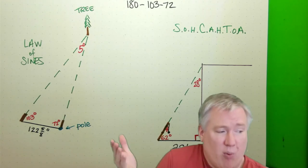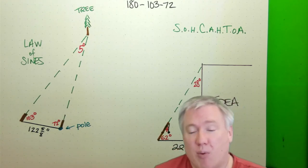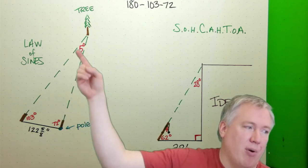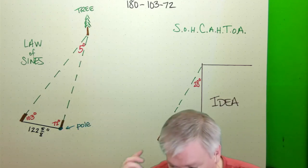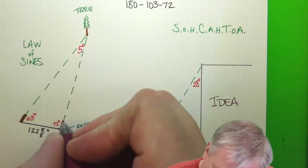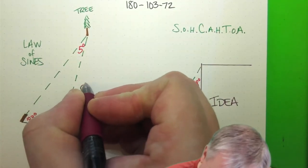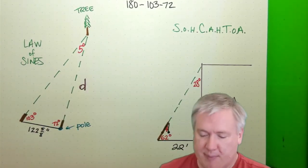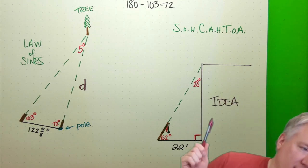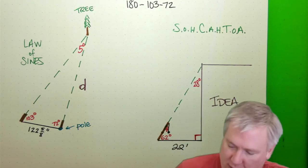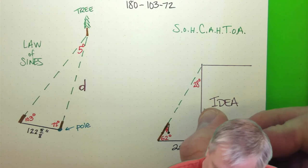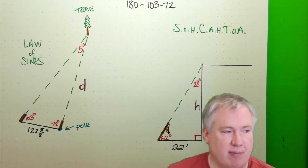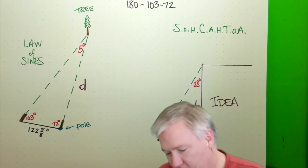The next thing to do is to identify what am I trying to figure out? What do I want to know? So in the case of this example, I want to know the distance from the pole to the tree. And so I'm going to just call this side D. That's the distance. And then over here I'm trying to find the height of IDEA. So let me just call this side H for height.